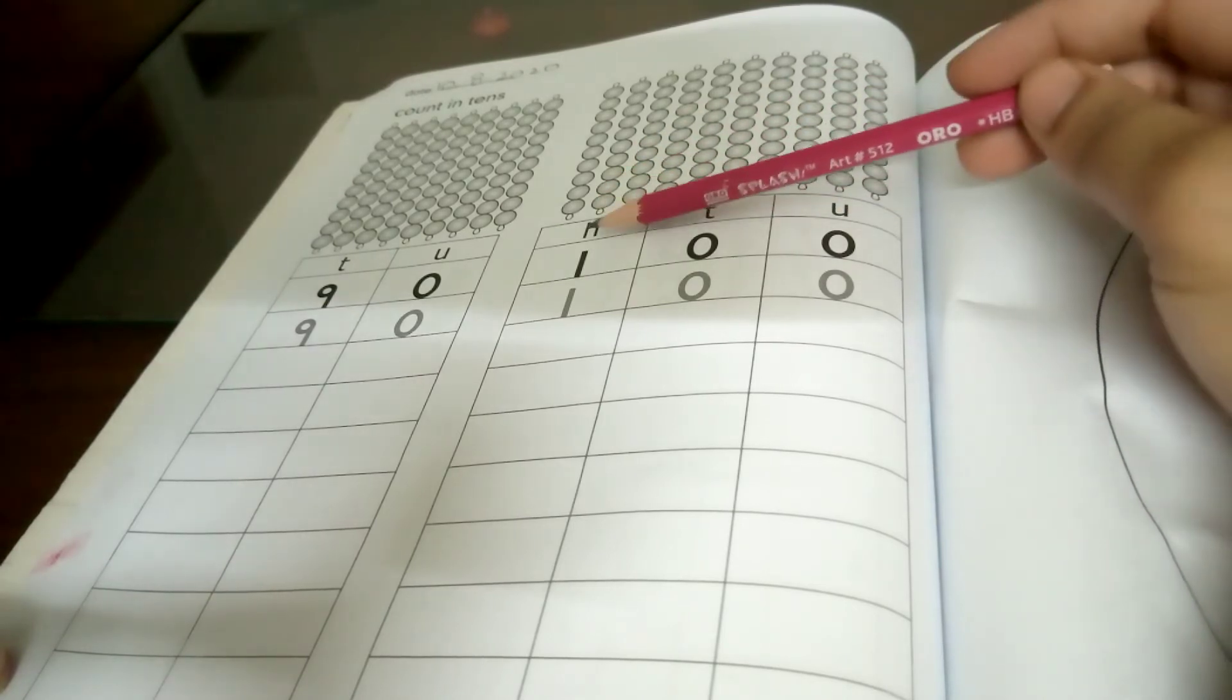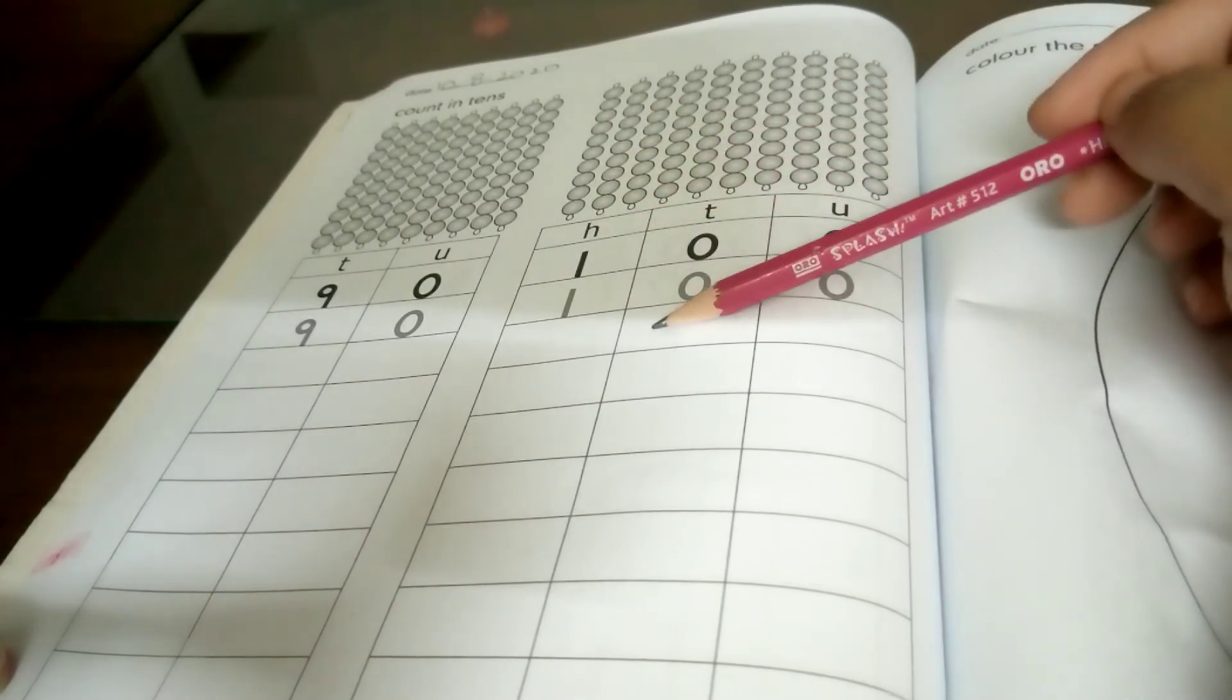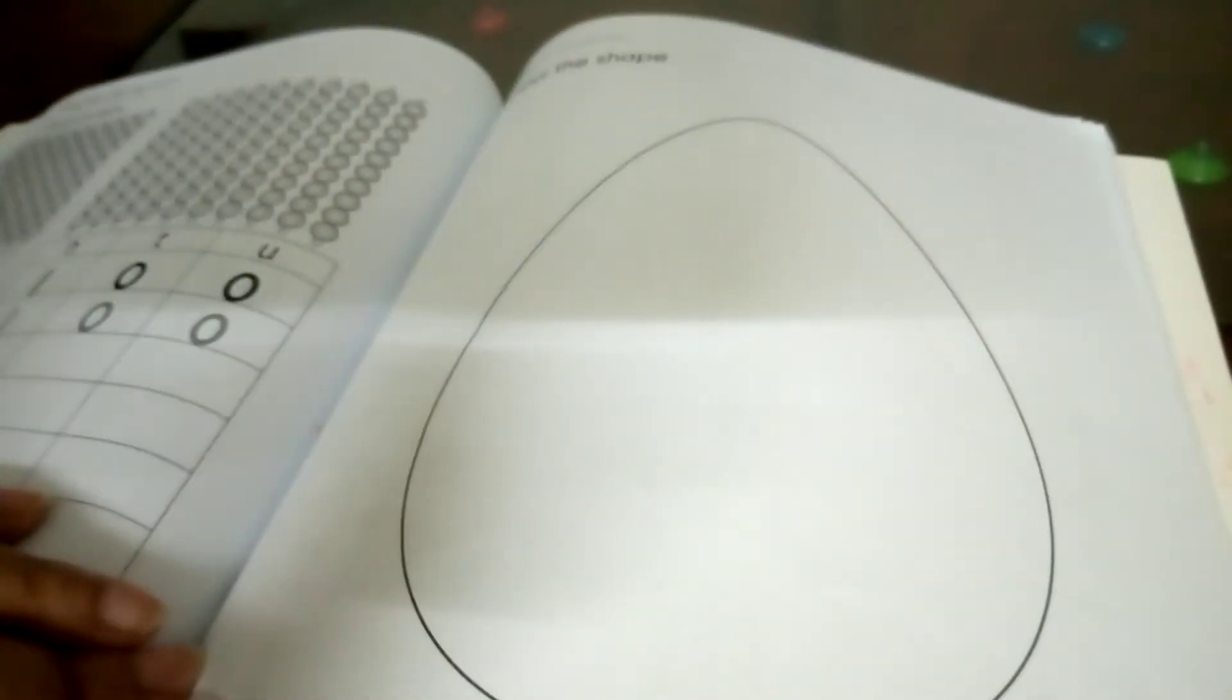You have to do this page and the next page also. You will color in the shape. Oval shape is oval.